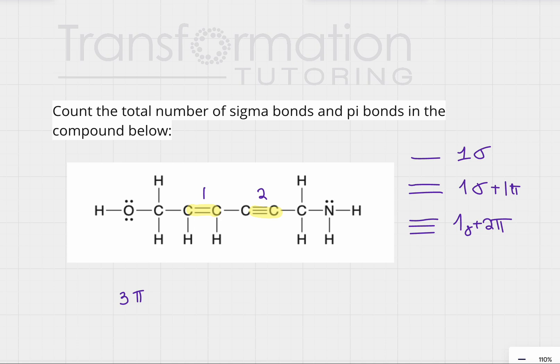Now let's go ahead and do sigma. So for sigma, we can just count how many bonds we have. We have one, two, three, four, five, six. Remember double bond has one sigma.